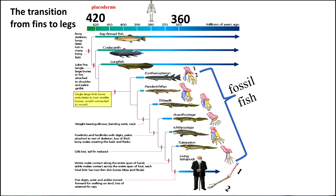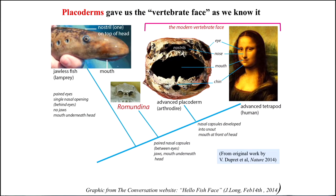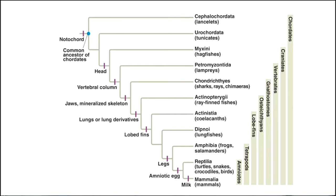What about Placoderms? Placoderms are even earlier fish, about 420 to 410 million years ago. The point is that they gave us the vertebrate face. On the left you have a jawless fish — it doesn't have nostrils in the front of its face; it has one nostril on the very top, a single nostril opening behind the eyes, and it had no jaw. Jaws are very important things — they help you chew food. Jawed fish evolved out of jawless fish.